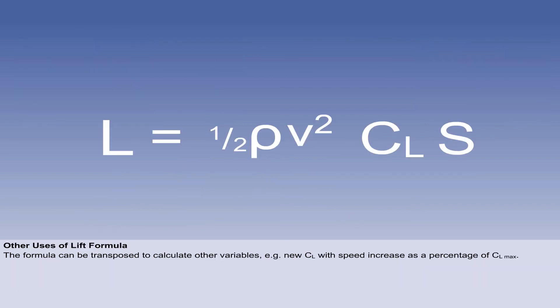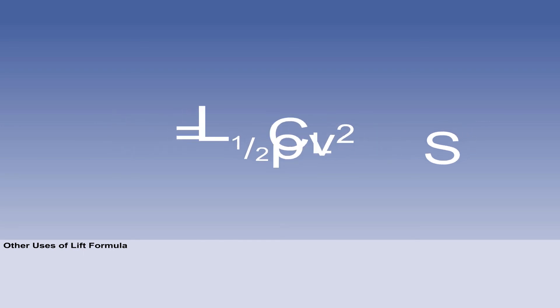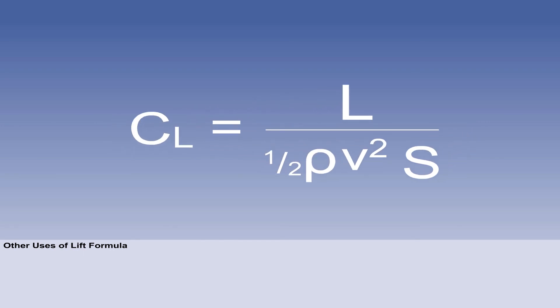The lift formula can be transposed in several ways to calculate variables which may be of interest to a professional aviator. For example, if speed is increased in level flight by 30% from the minimum level flight speed, we can calculate the new CL as a percentage of CL max. L equals half rho V squared times CL times S, when transposed, becomes CL equals L over half rho V squared S.